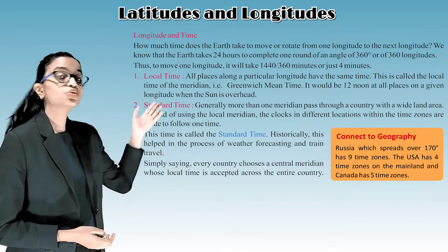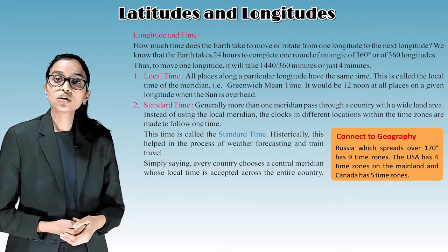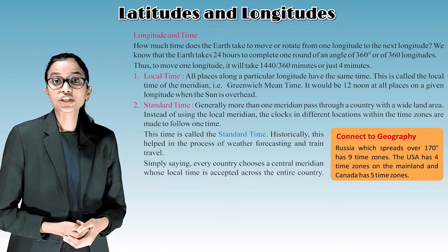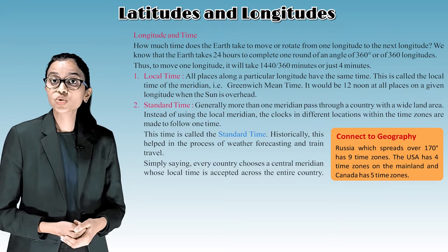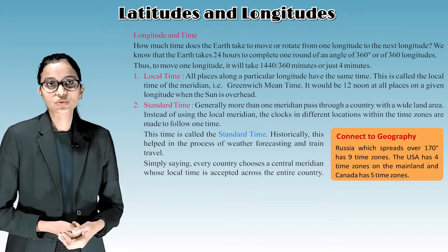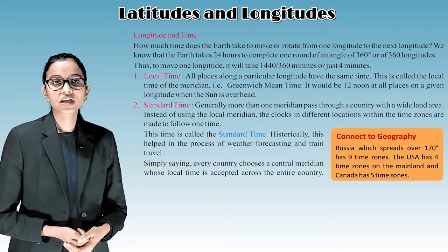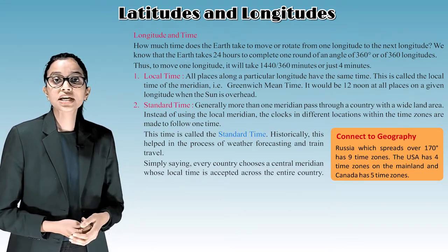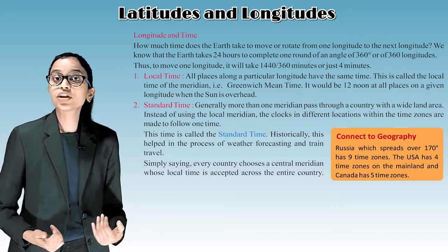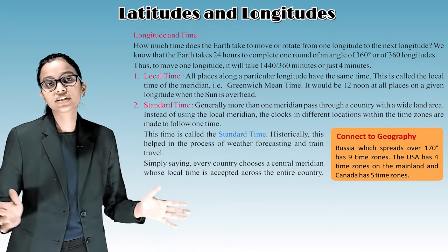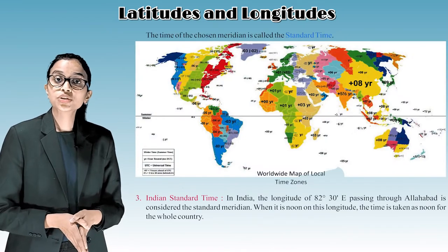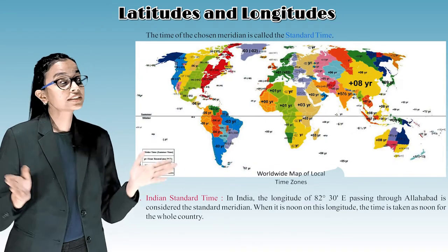Connect to geography: Russia, which spreads over 170 degrees, has 9 time zones. The USA has 4 time zones on the mainland and Canada has 5 time zones. Simply put, every country chooses a central meridian whose local time is accepted across the entire country. The time of the chosen meridian is called the standard time.